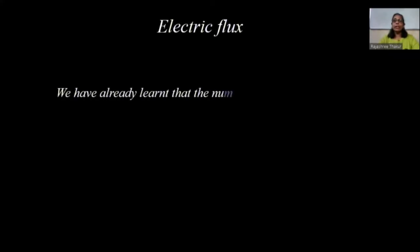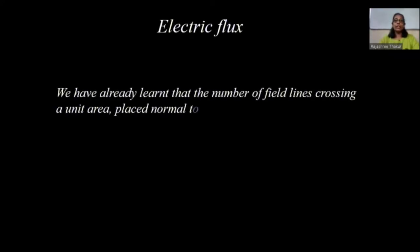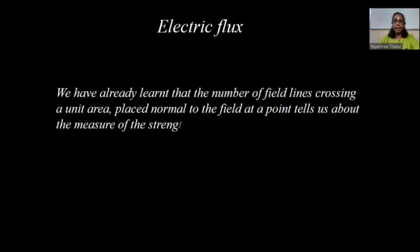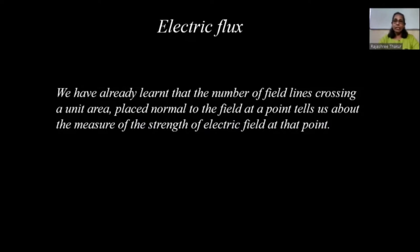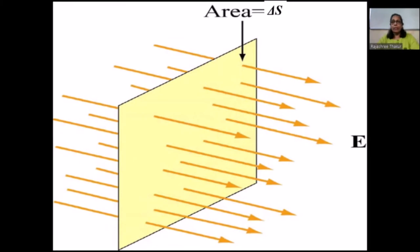We have already learned that the number of field lines crossing a unit area kept normal to the field at a point tells us about the strength of the electric field at that point. So consider this area delta S, kept normal to the direction of electric field.